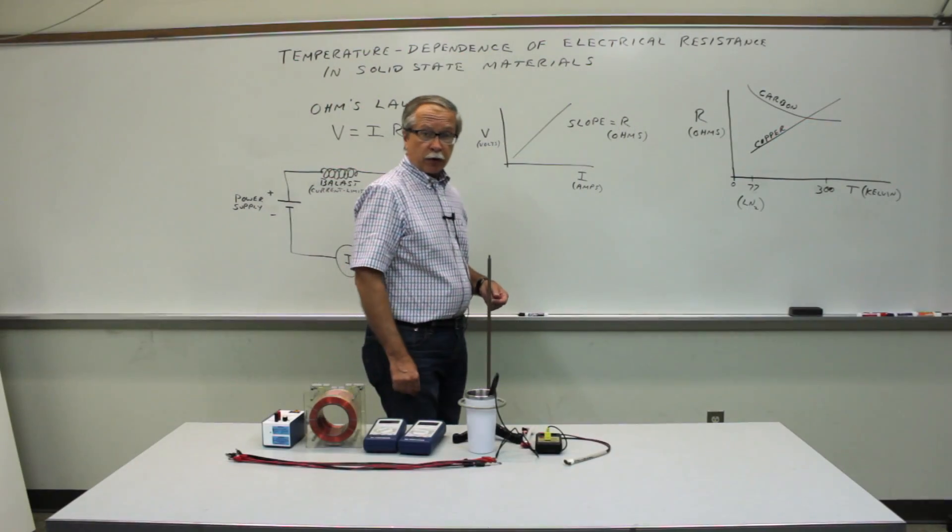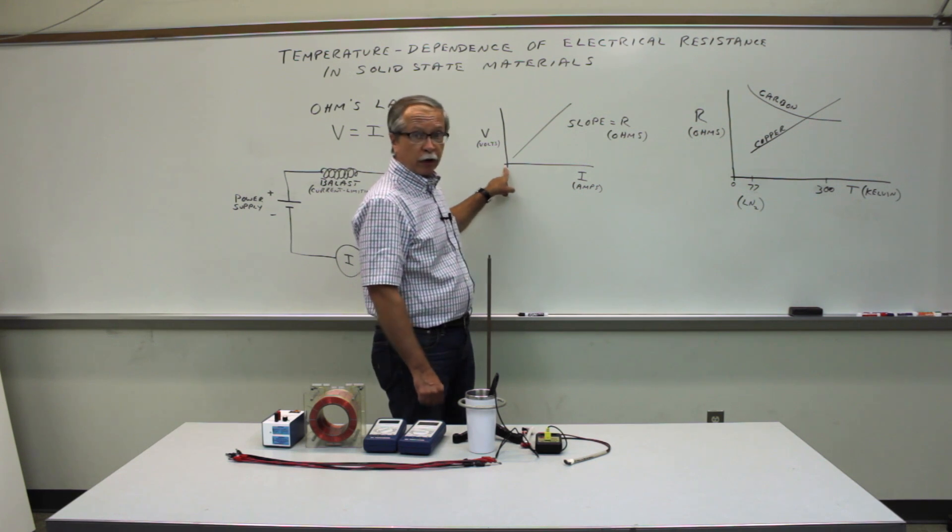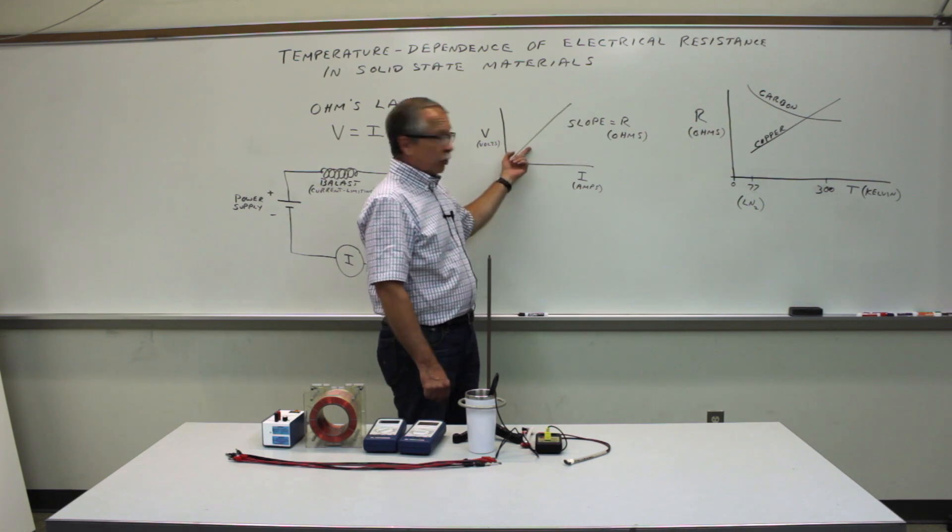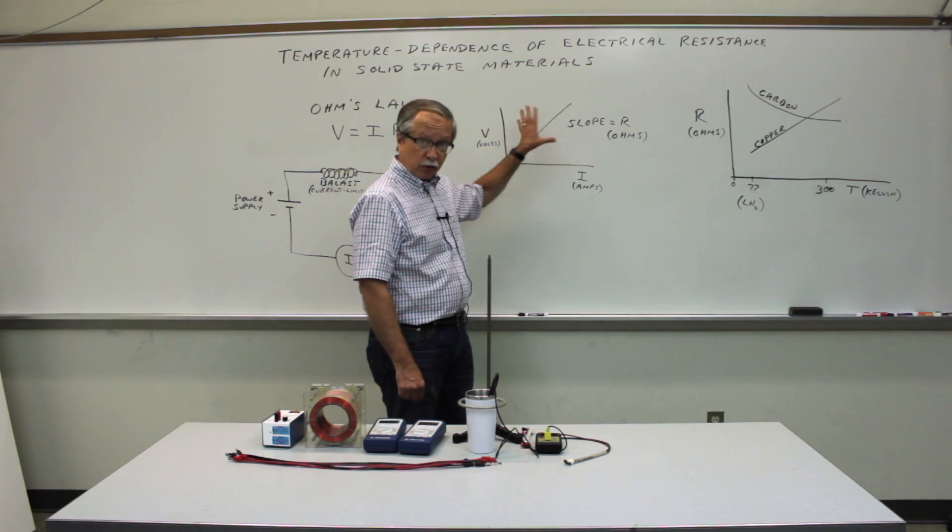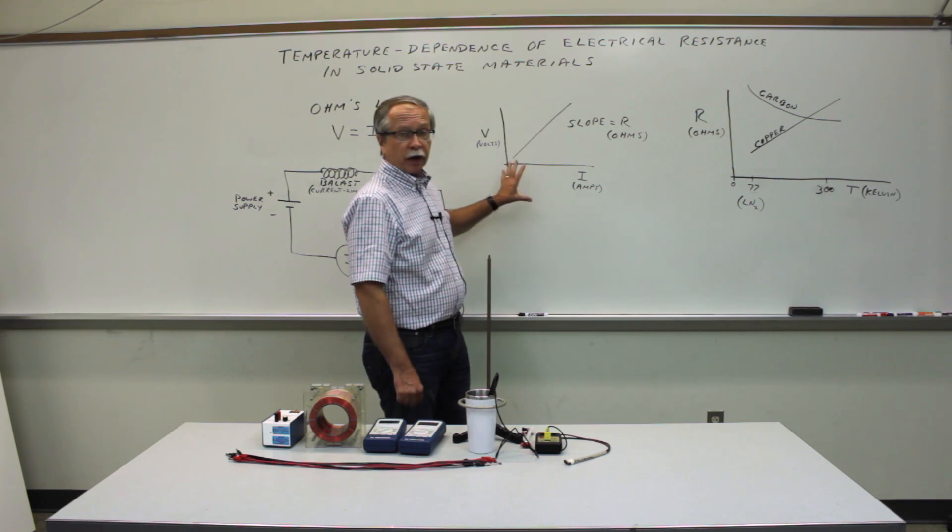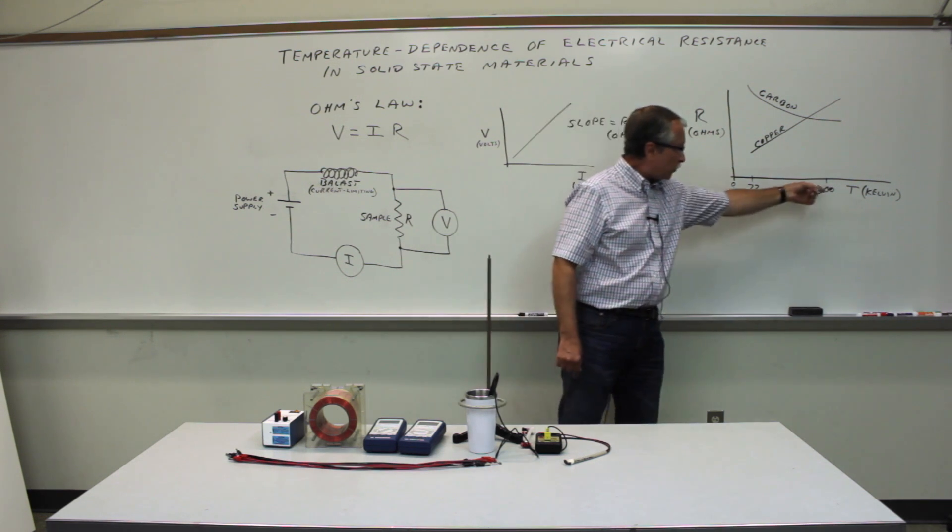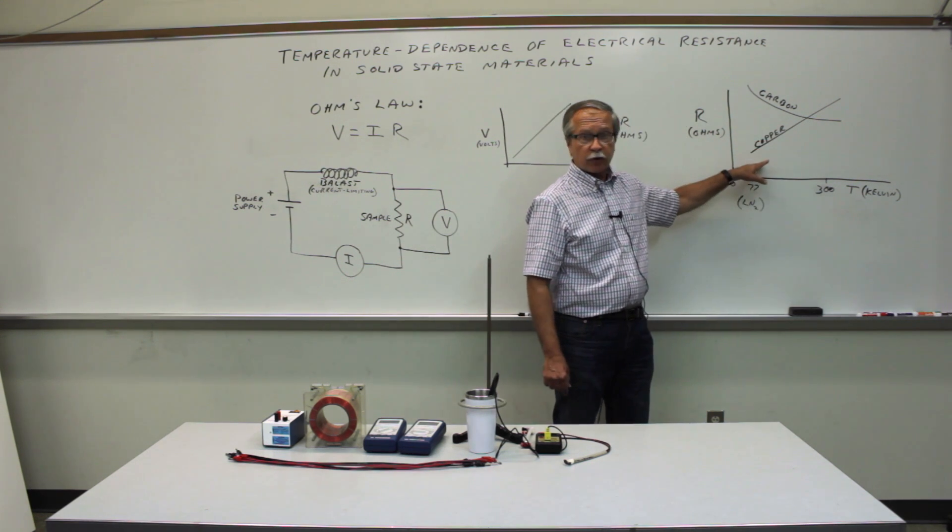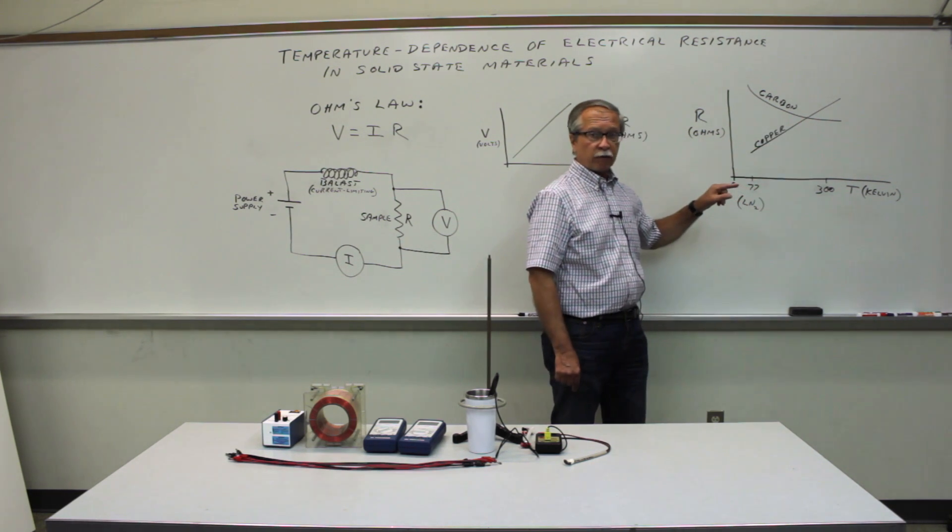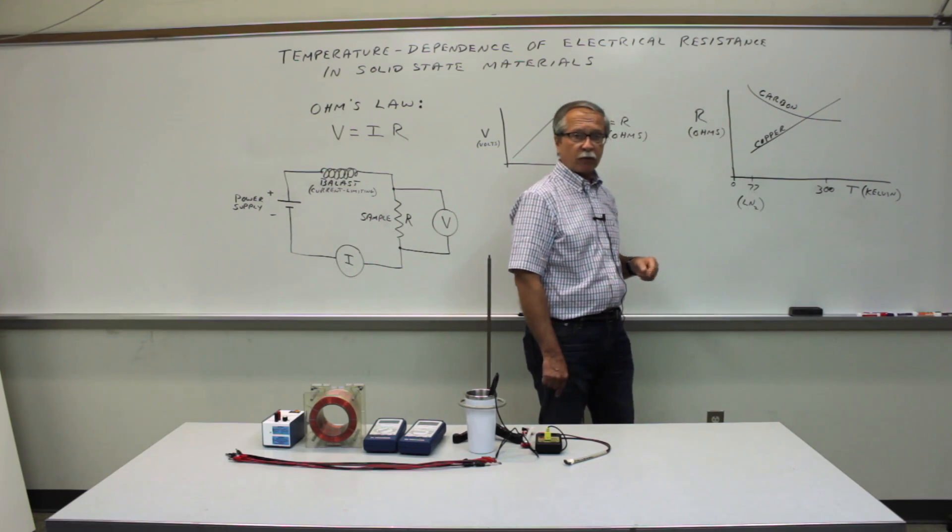Just to review the objective of the experiment, you plot the voltage across the sample as a function of the current passing through the sample. The slope of the resulting straight line is the resistance, assuming that the temperature is held constant. And you do this at various temperatures and then plot the resistance as a function of the temperature and observe the two different behaviors. Metals increase roughly linearly as a function of temperature and semi-metals decrease in resistance versus temperature.